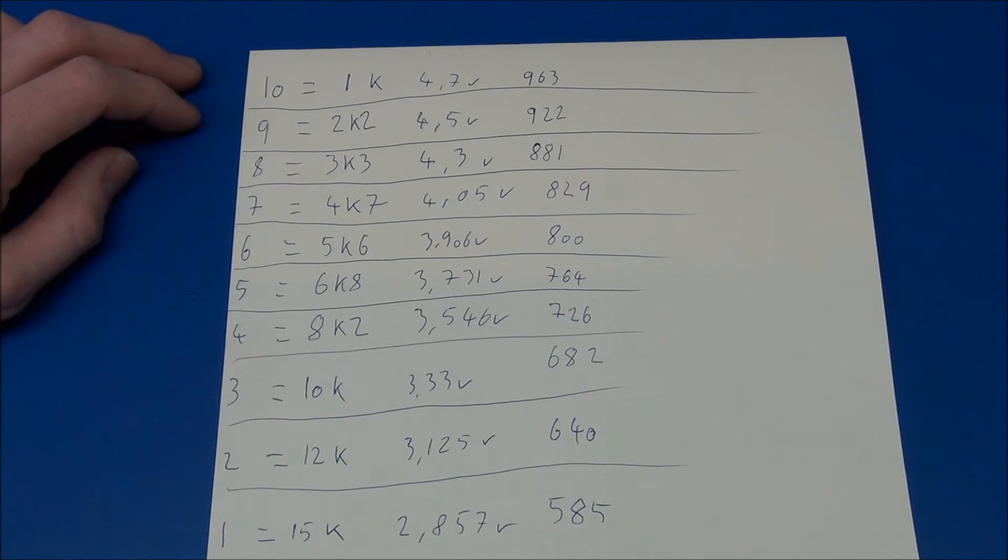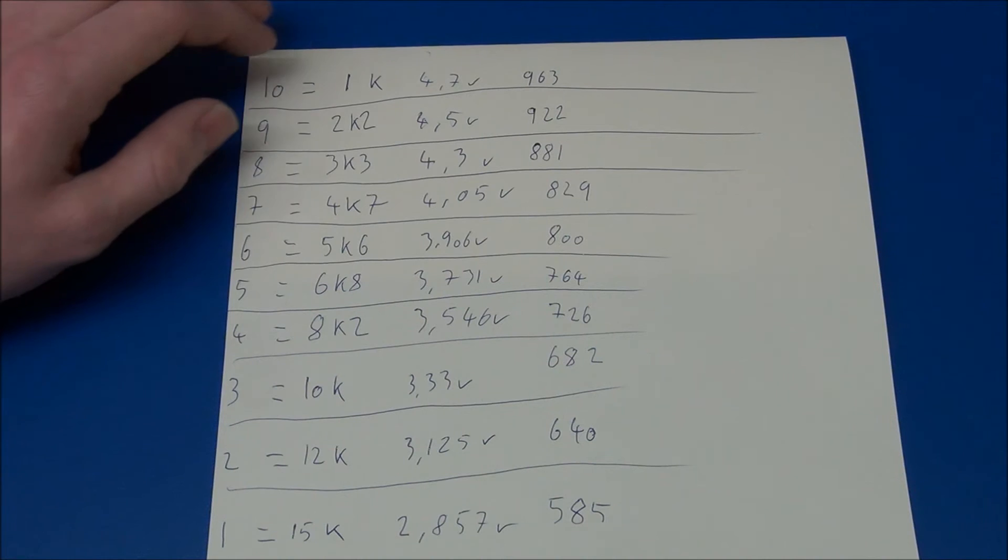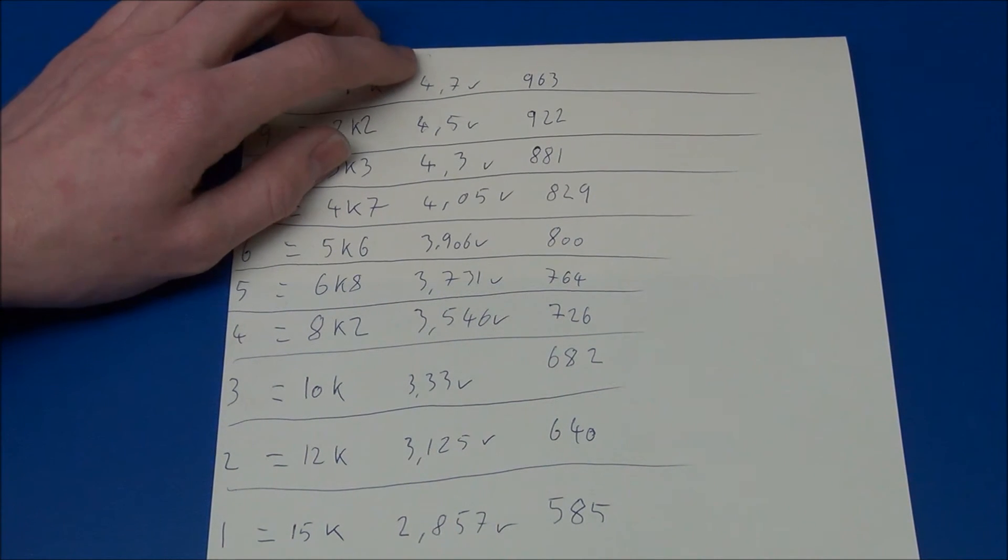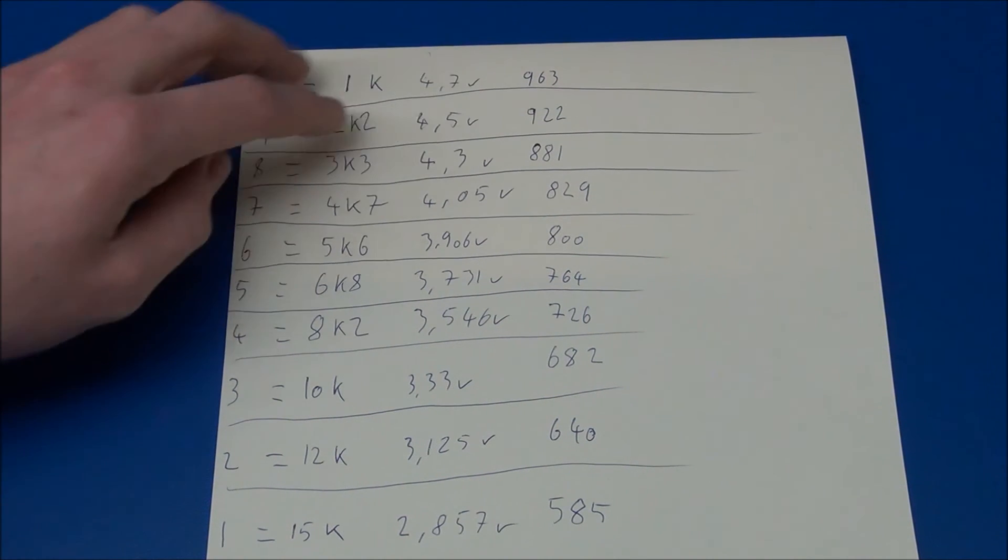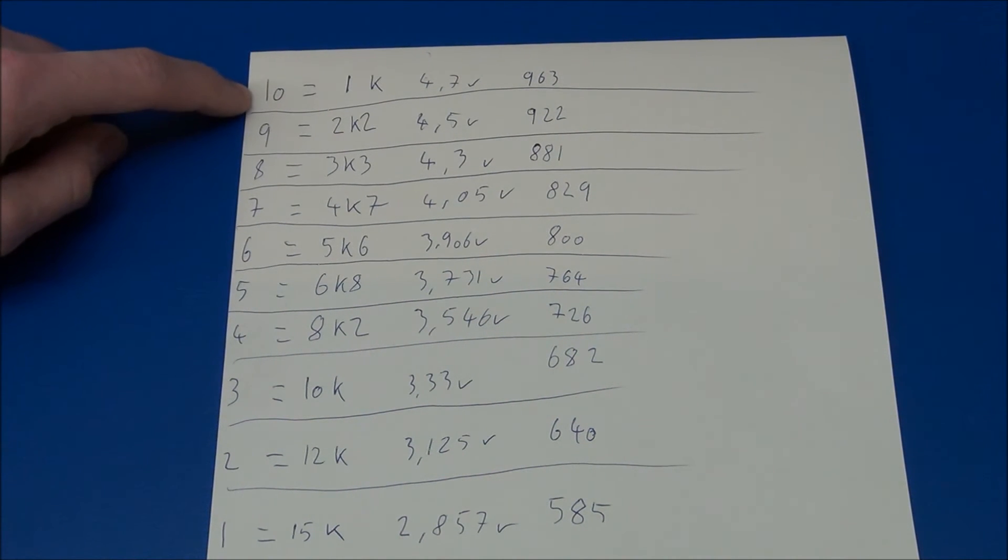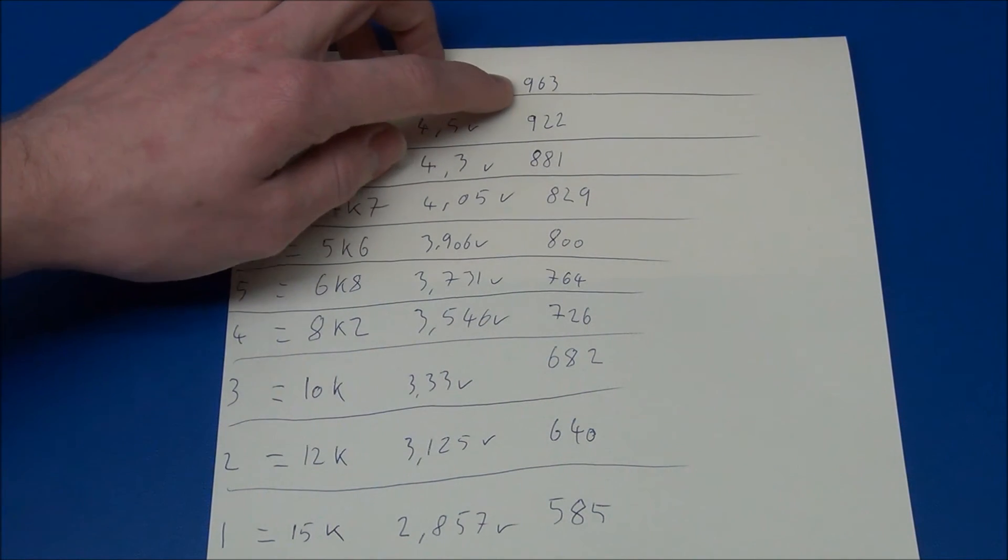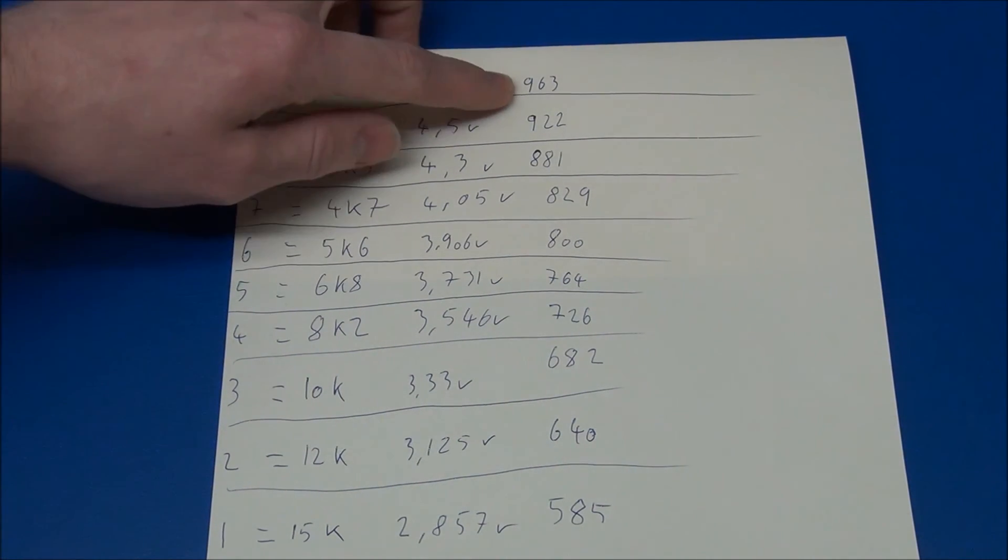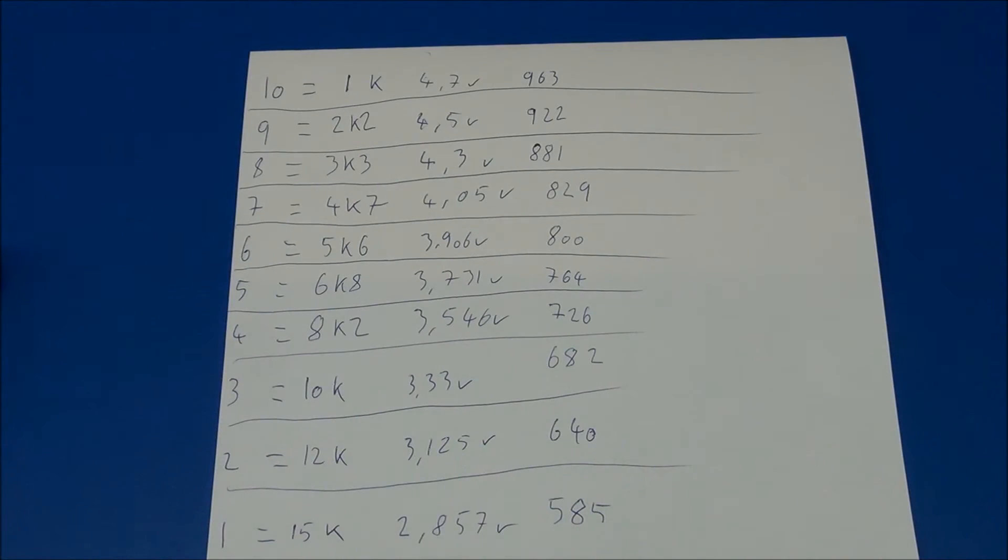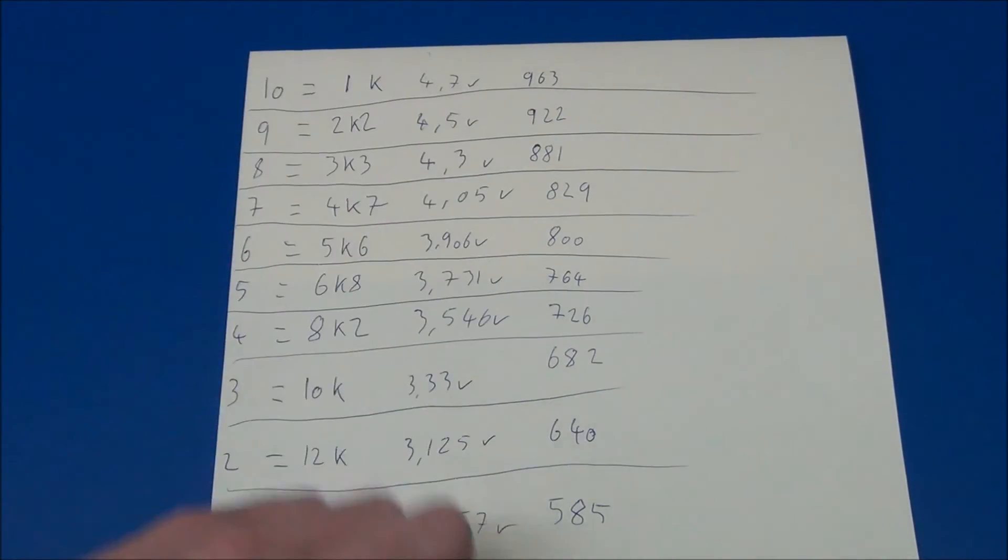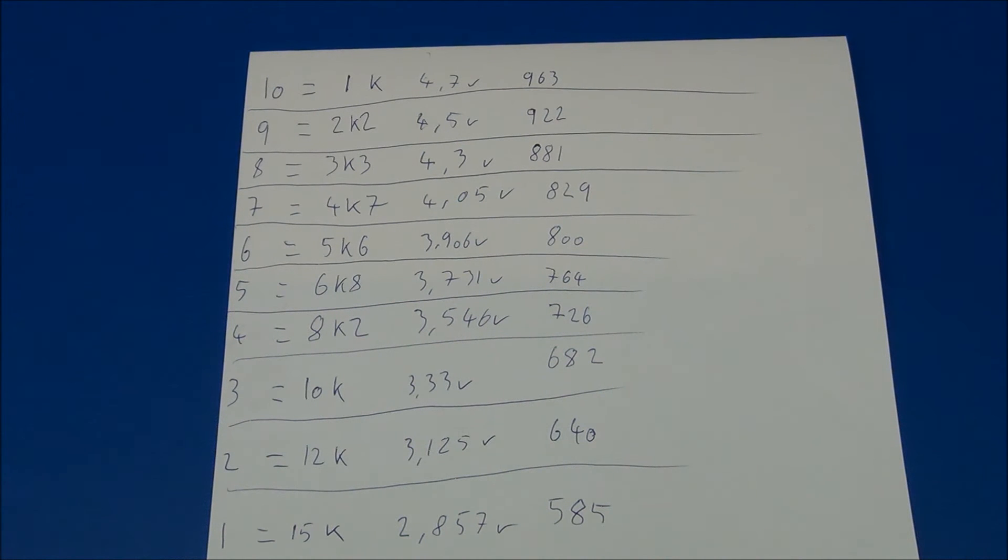Since this is a 10-bit ADC, the max value will be 1023. And then we take that and we divide that by 5 volts, which will be our maximum. And then we multiply it by 4.7. That will be the voltage for this actual switch. And we will get this value, or thereabout, because there is of course a tolerance in the resistors. So we did just the same for the rest of the resistors.